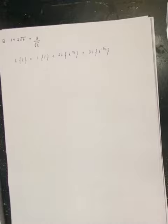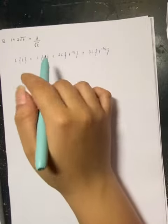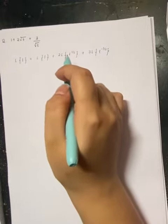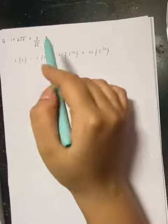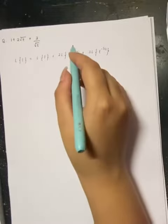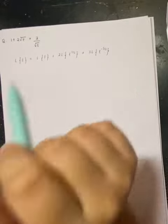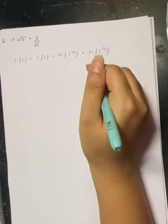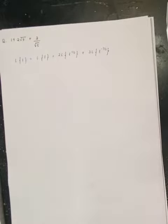So Laplace transform of this will be Laplace of 1 plus 2L, taking the constant out, and t to the power 1 by 2 because it's root t, plus 3L into 1 by 2, minus 1 by 2 because it's in the denominator.